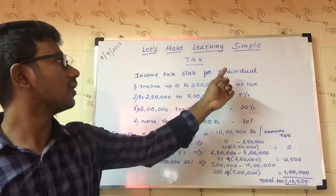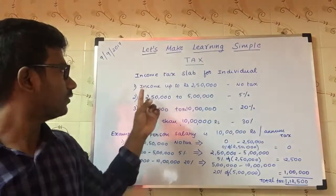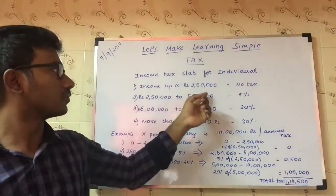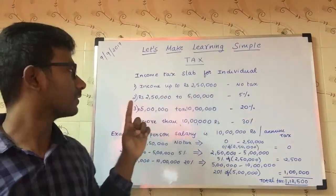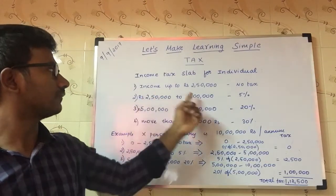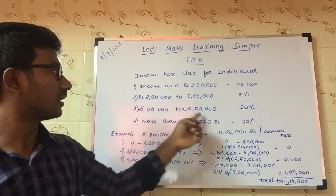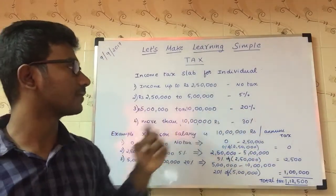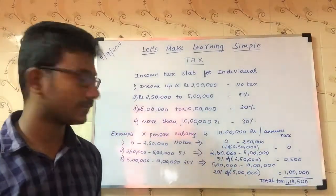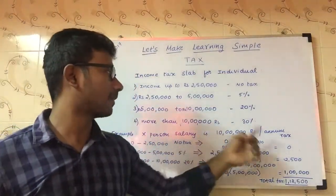So for now, we will see how tax slabs are defined for the individual category. Income up to 2,50,000 — no tax. Second slab: 2,50,000 to 5,50,000 — 5% of your salary. Third slab: 5,50,000 to 10,50,000 — 20% of your salary. More than 10,50,000 — 30% of your salary.